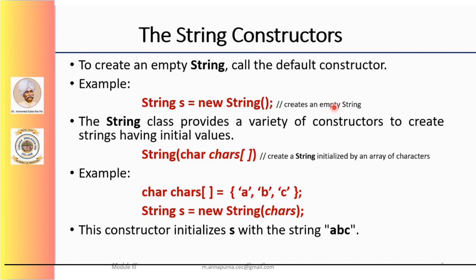To create a string initialized by an array of characters, we can use the constructor: String(char chars[]), where chars is an array of characters. Here is an example — we have three character constants a, b, c assigned to the char array. Now if we use this particular character array and pass it to the string constructor as a parameter, this string constructor will create a new string object. So the constructor String(char[]) will initialize the string object with the string 'abc'. When we try to print the value of this string object it displays 'abc'.